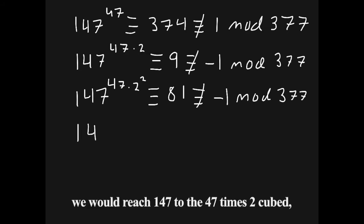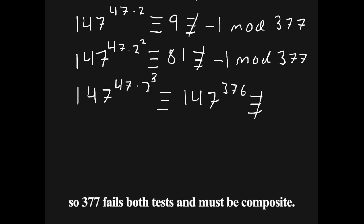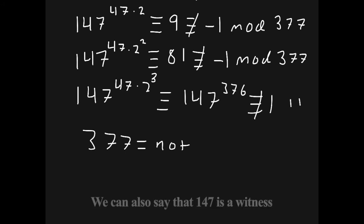If we squared again, we would reach 147 to the 47 times 2 cubed, which is 147 to the n minus 1, Fermat's little theorem. So 377 fails both tests and must be composite. We can also say that 147 is a witness to the compositeness of 377.